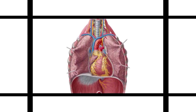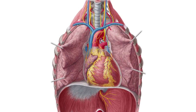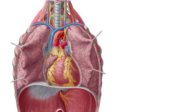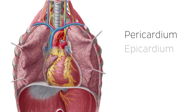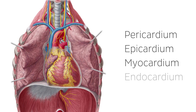The heart is a large muscular organ that is comprised of four different layers. From the outside to the inside, they are called the pericardium, the epicardium, the myocardium, and the endocardium. Each layer has a different function that primarily aids the pumping action of the heart, which allows the blood to flow around the body. The aim of this tutorial is to highlight the myocardium.